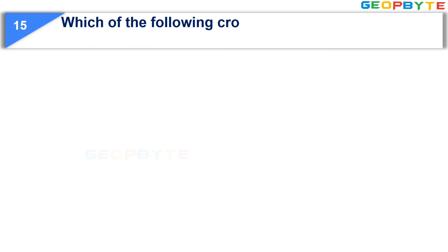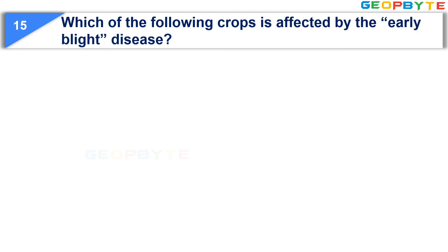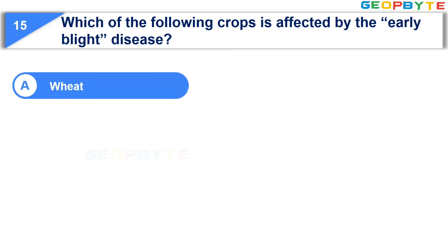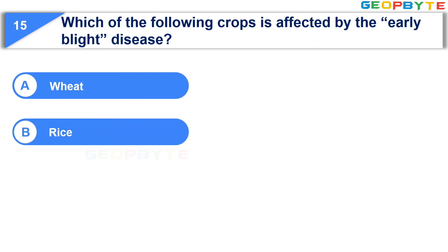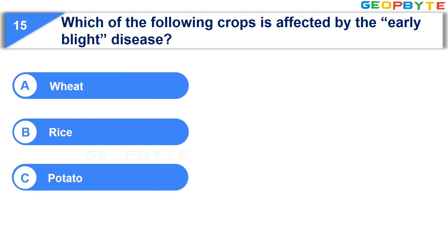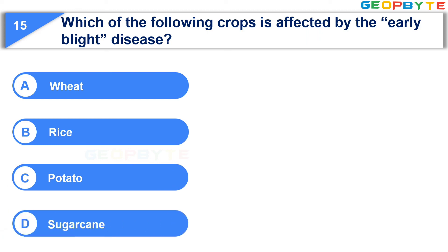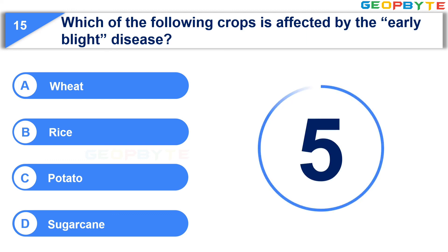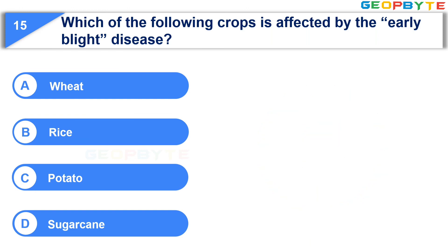The last question is: Which of the following crops is affected by the early blight disease? Option A: Wheat. Option B: Rice. Option C: Potato. Option D: Sugar cane. Your time starts now. Your time is up and the correct answer is Option C: Potato.